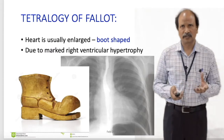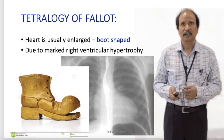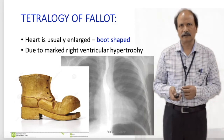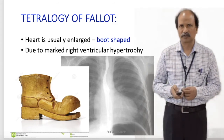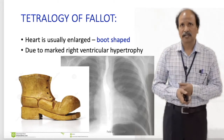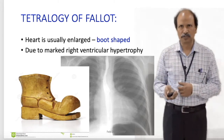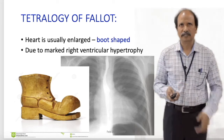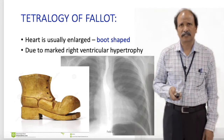I will tell you how to remember these four components in an easier fashion. This is an X-ray of a patient suffering from tetralogy of Fallot. The heart is enlarged and acquires the shape of a wooden boot. In earlier days, people used to use these wooden boots, and because of this resemblance, it was described as wooden boot shaped heart, which is commonly seen in the X-ray of tetralogy of Fallot.